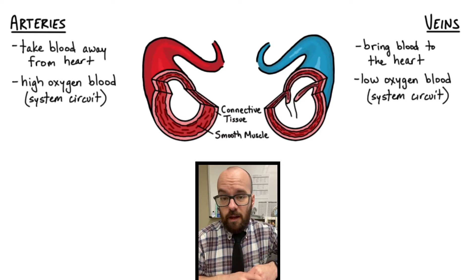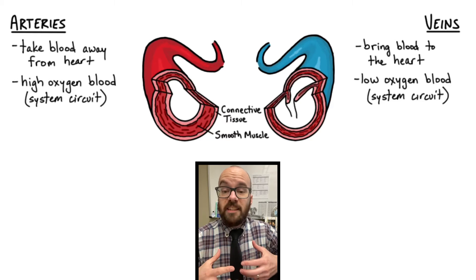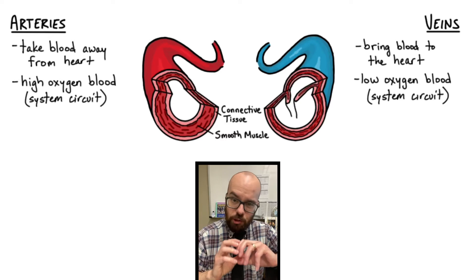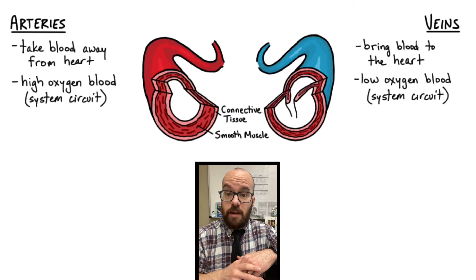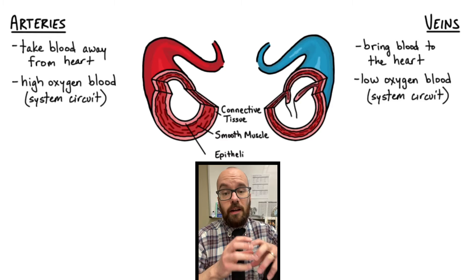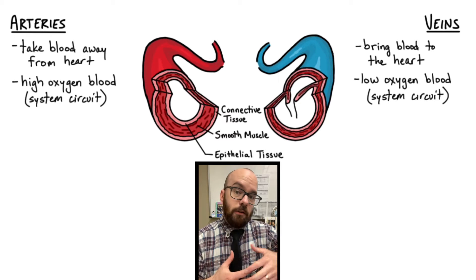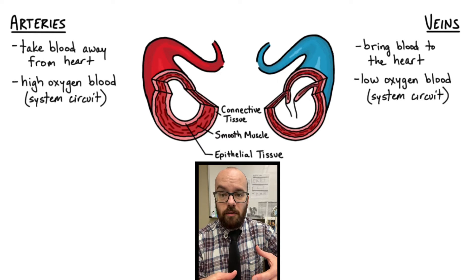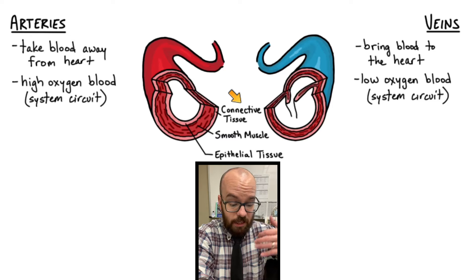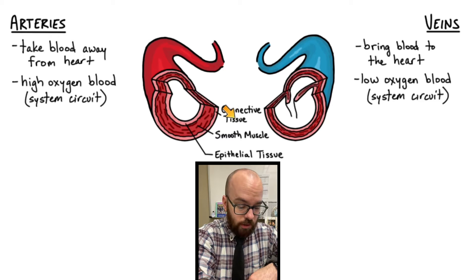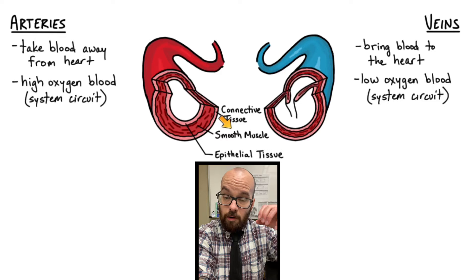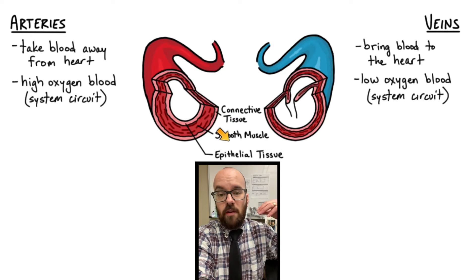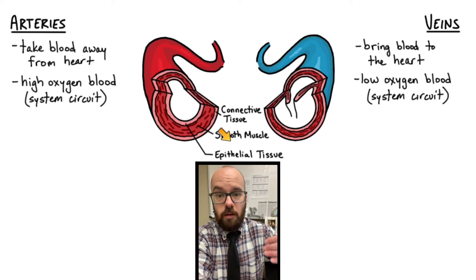Just inside the connective tissue layer is a layer of smooth muscle. That smooth muscle helps regulate the internal diameter of the blood vessel and also helps push blood through, especially in the veins. Finally, on the very inside is a layer of epithelial tissue, which provides a very smooth, low-friction surface for blood to flow past. So: connective tissue on the outside for shape and structure, smooth muscle to regulate diameter and push blood, and epithelial tissue on the inside.